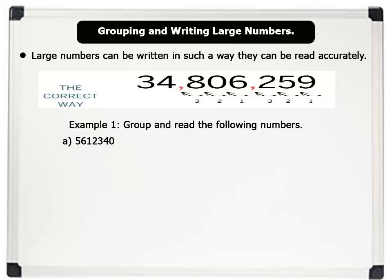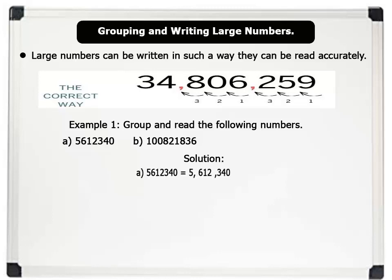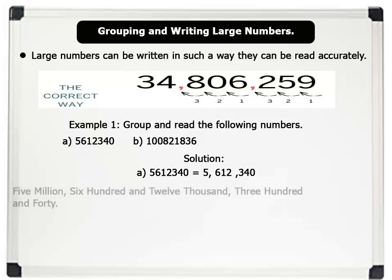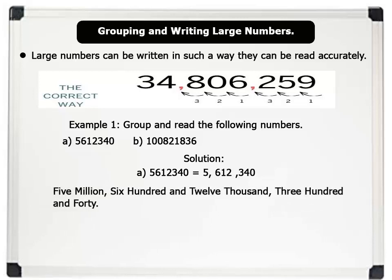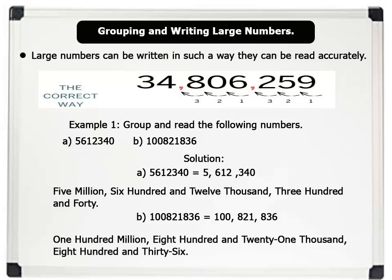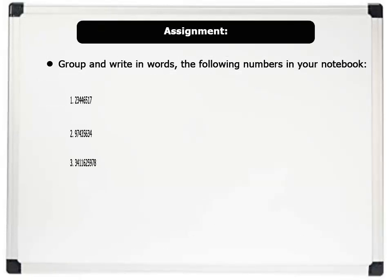Example A: five million six hundred and twelve thousand three hundred and forty. Example B: arrange the digits 3, 4, 0, 1, 0, 0, 0, 8, 2, 1, 8, 3, 6. Solution: first we group the digits in threes starting from the right, as shown on the board. Now let's read the numbers in words. A: five million, six hundred and twelve thousand, three hundred and forty. B: one hundred million, eight hundred and twenty-one thousand, eight hundred and thirty-six. That's brilliant.